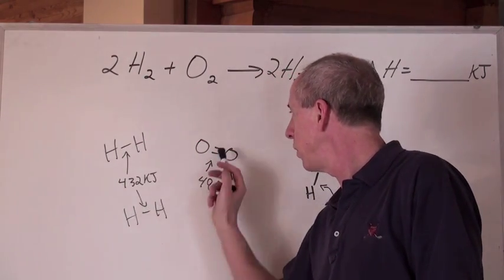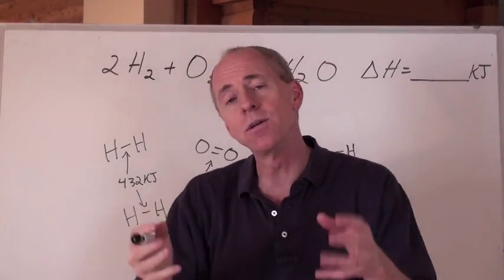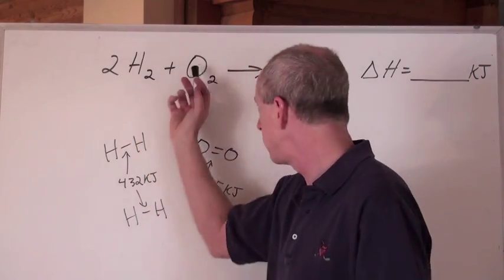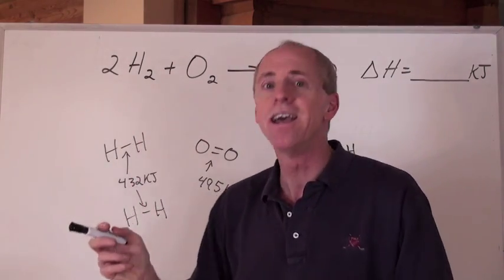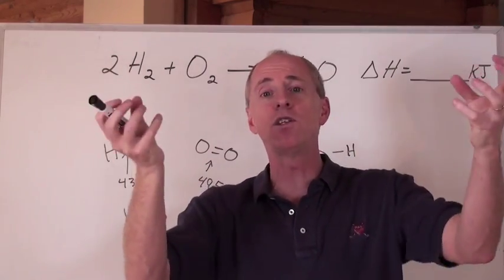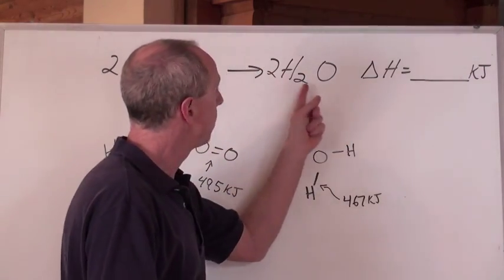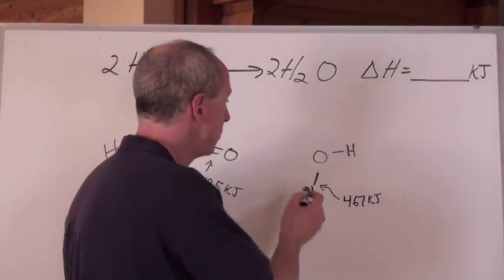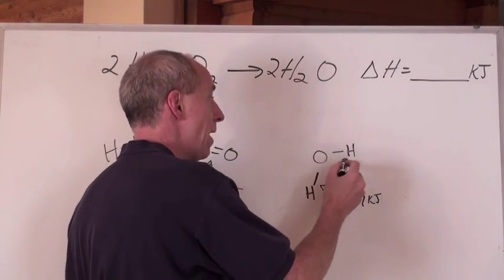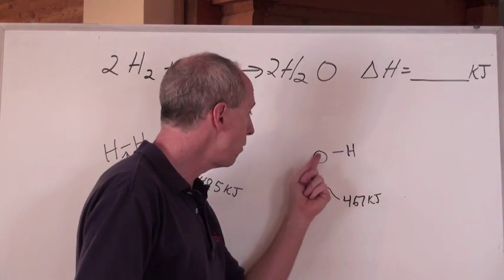When you take that number times 2 and add it to the 495 kilojoules, that's the total amount of energy required to dissociate those bonds — the oxygen-oxygen and the hydrogen-hydrogens — and scramble them all as individual atoms that will recombine to form H₂O. H₂O looks like a bent molecule — don't worry about that yet — and it's made with the two hydrogens bonded to the oxygen.